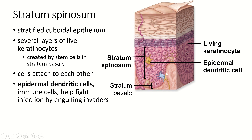There are also within this layer epidermal dendritic cells, which are immune cells that can actually move around through this layer to engulf any possible pathogens that get in there. The term dendritic comes from the root dendro, D-E-N-D-R-O, which means tree. So these dendritic cells have branches on them like a tree — that's where they get their name. We're going to see dendritic cells in some other tissues as well, so know that term.